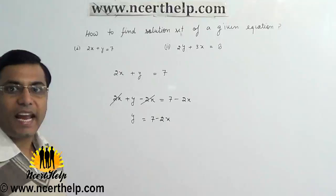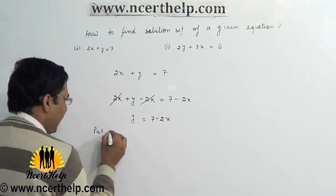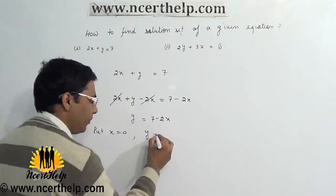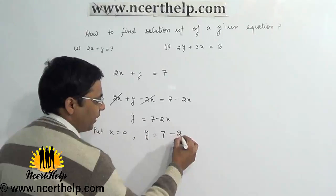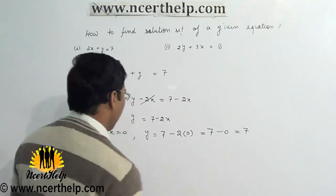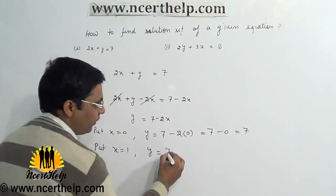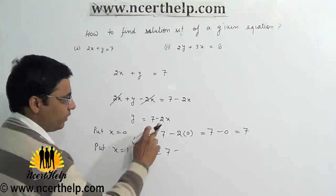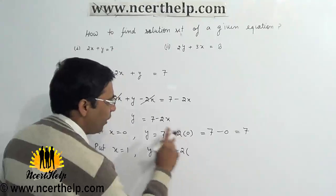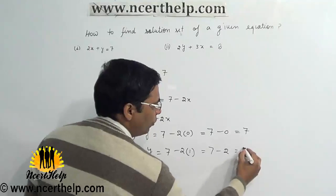Now we can plug any value in place of x. Put x equals 0: y equals 7 minus 2 times 0, which gives y equals 7. Next, put x equals 1: y equals 7 minus 2 times 1, which is 7 minus 2, so y equals 5.